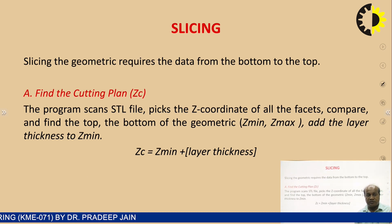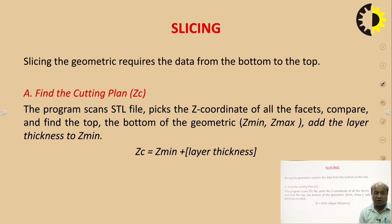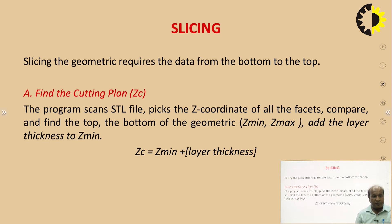We have to find the Z coordinate of the cutting plane: Z equals Z minimum (the bottom of the part) plus the layer thickness. The layer thickness can be provided at the start; it may depend on the additive manufacturing technology and machine. The layer thickness may vary from 100 microns to 200 or 300 microns, depending on the system or technology used to build the part.